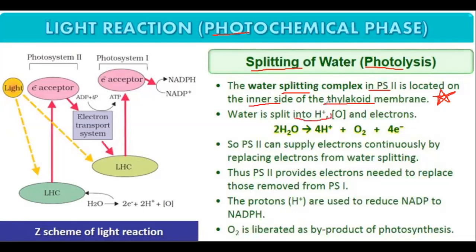Water is split into 4H+ ions, oxygen molecules, and electrons. PS2 can supply electrons continuously by replacing electrons from water splitting. The Z scheme is non-cyclic — it is Z-shaped. Non-cyclic means that wherever this reaction started, the reaction does not return to the start.